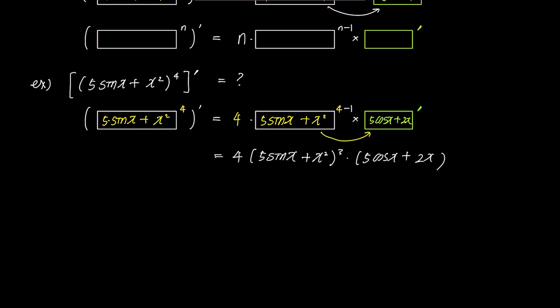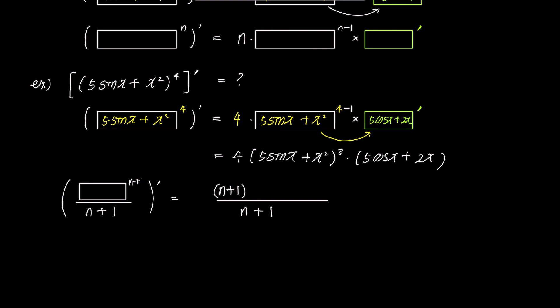Now let's explore how the box rule applies to integration. Starting with box^(n+1) / (n+1), when we differentiate it, the constant n+1 in the denominator remains, and the exponent n+1 comes down and multiplies, reducing the exponent to n. Finally, box prime is multiplied. In simplified terms, we get box^n times box prime.